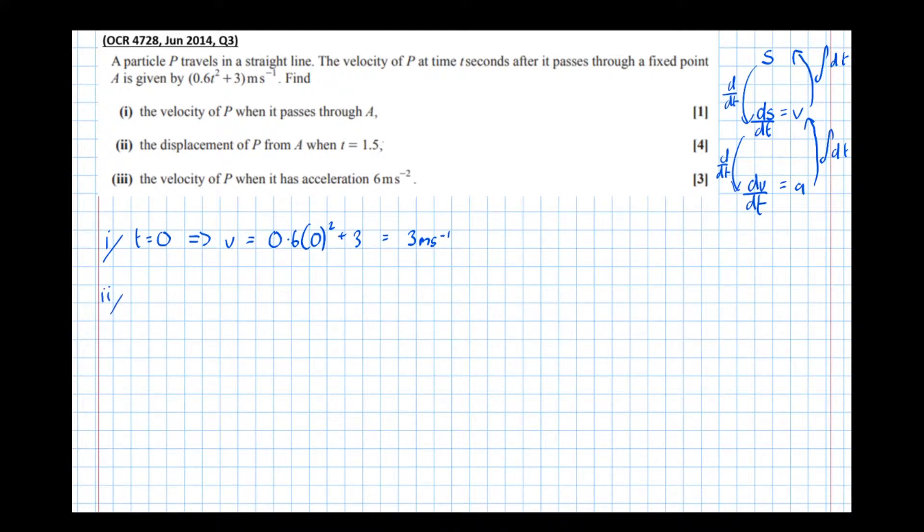Part 2: The displacement of P from A when t equals 1.5. Right, so we're going to have to integrate here. The time at which we're wanting to find the displacement is 1.5 and we want it relative to when t equals 0. So the integral between 1.5 and 0 of 0.6 t squared plus 3 dt.